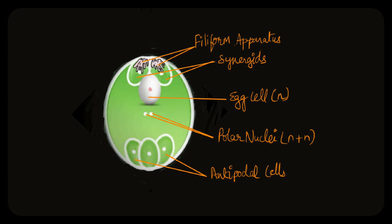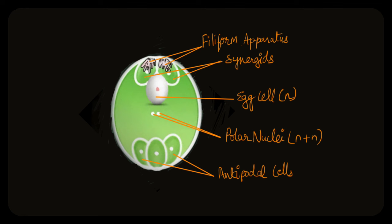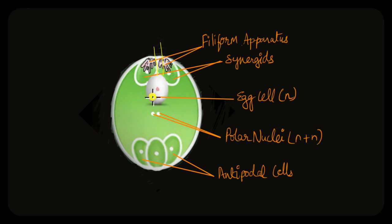Inside the embryo sac, you have two synergids located on the micropilar end. Within the synergids are filiform apparatus with finger-like projections. The function of the filiform apparatus and synergids is to guide the pollen tube so it can reach inside the embryo sac. Below the synergids is the egg cell — the actual female gamete — which is haploid. Below the egg cell are two polar nuclei, which are haploid as well, written as N+N because they are two separate nuclei. At the opposite end are three antipodal cells.